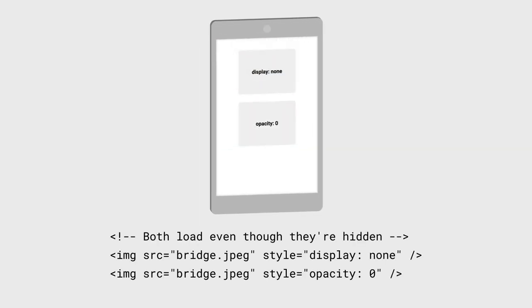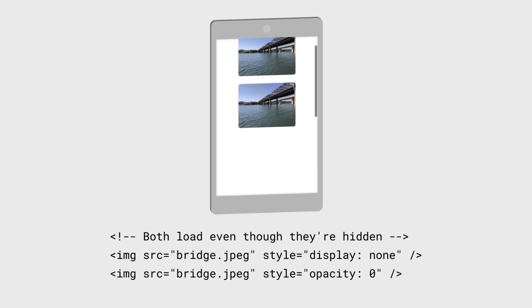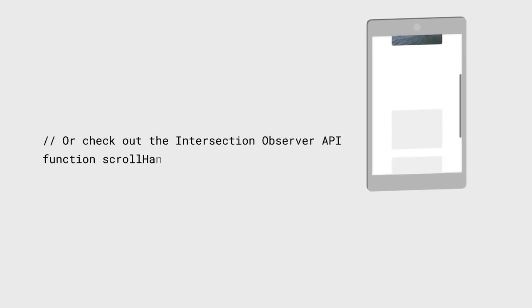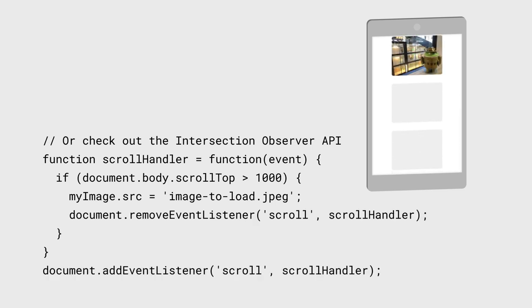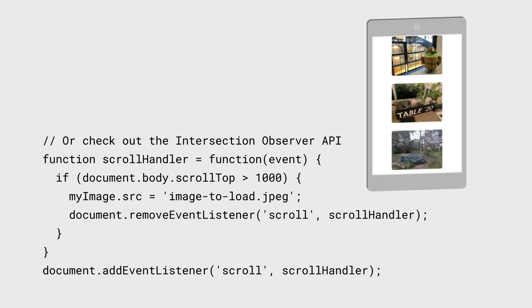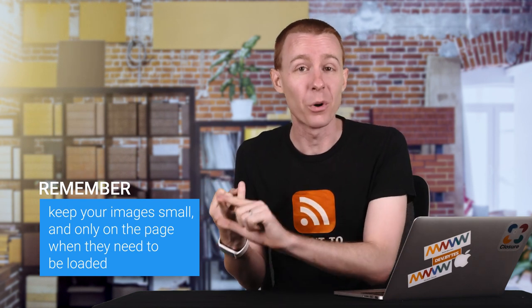Next up is how you use these images on your pages. If images are on a page anywhere — even if they're hidden through display none or opacity zero — they'll still get loaded by your browser. Be sure to only create images when they're needed. And if that's, say, as a user scrolls down a page, use a passive event listener to check whether the image you want to load has actually come into frame.